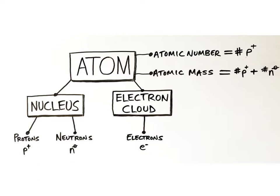Each atom contains three subatomic particles called protons, neutrons, and electrons that determine the characteristics of the atom and have important roles in chemical reactions. The nucleus is the central region of an atom which contains the tightly packed protons and neutrons. Electrons are moving at high speeds in a spherical region around the nucleus called the electron cloud.